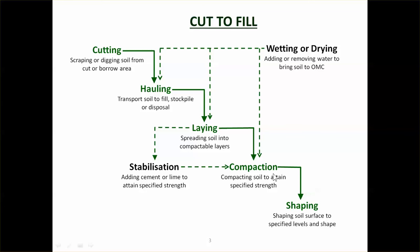In addition to those main things, sometimes you need to do wetting or drying. Cohesive soils — clays and silts — need to be compacted at or close to the optimum moisture content. If it's too dry you need to wet it up, and if it's too wet you need to dry it out. This can happen before you do the hauling, after you've done the laying in layers, or just before you do the compaction.